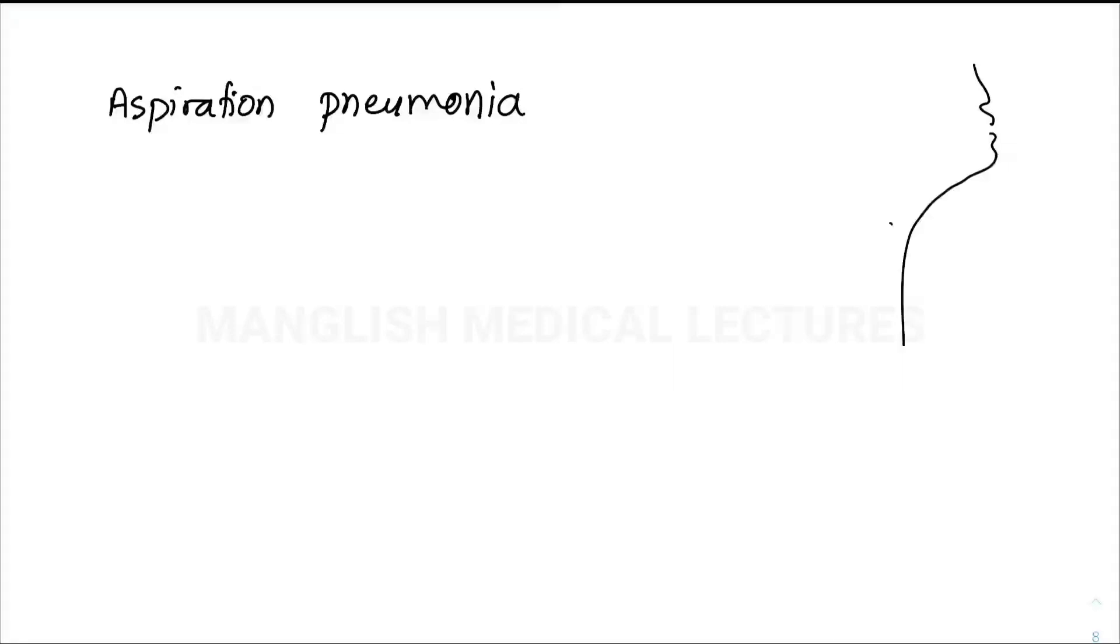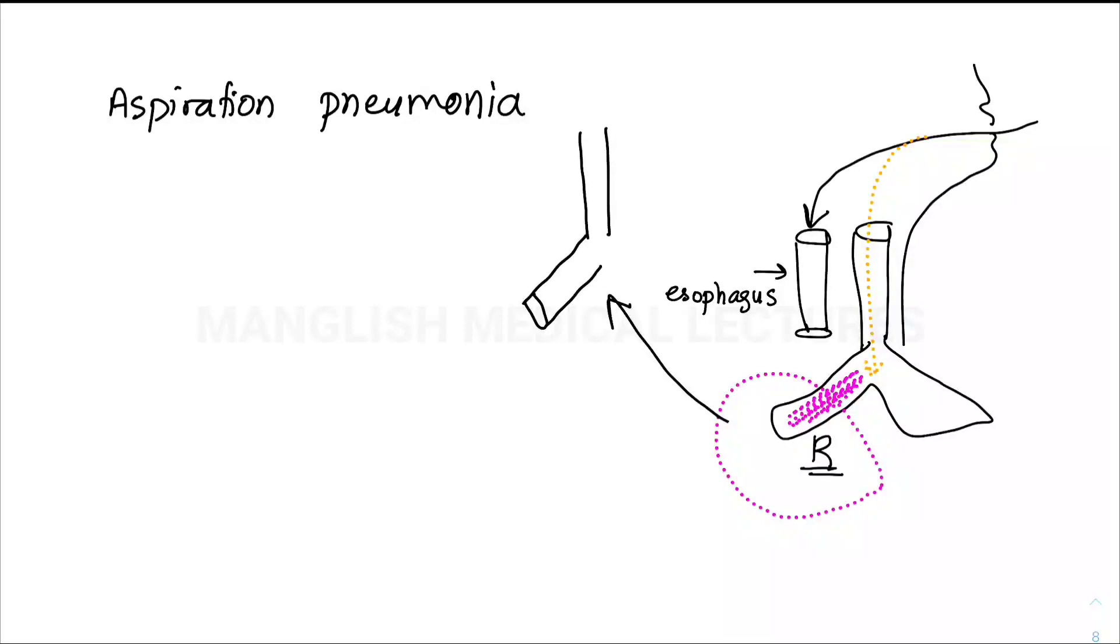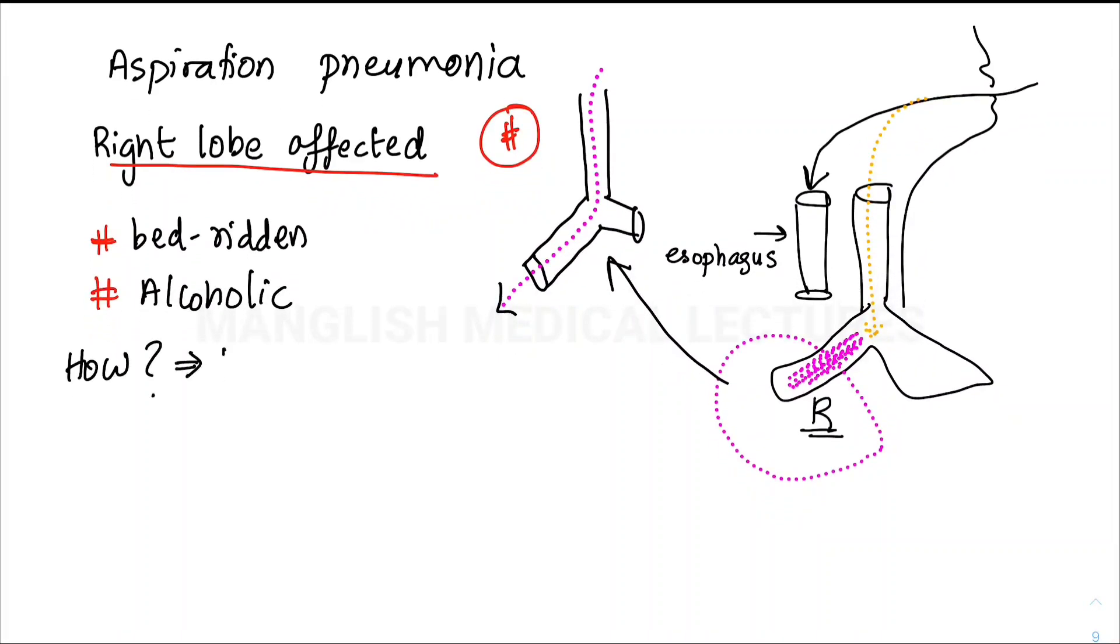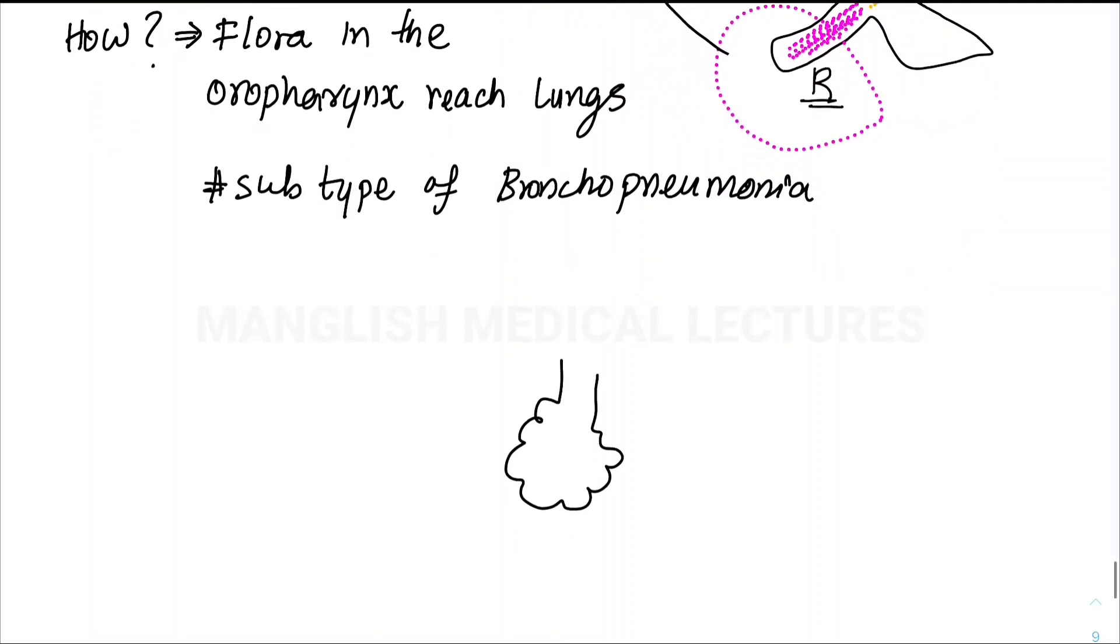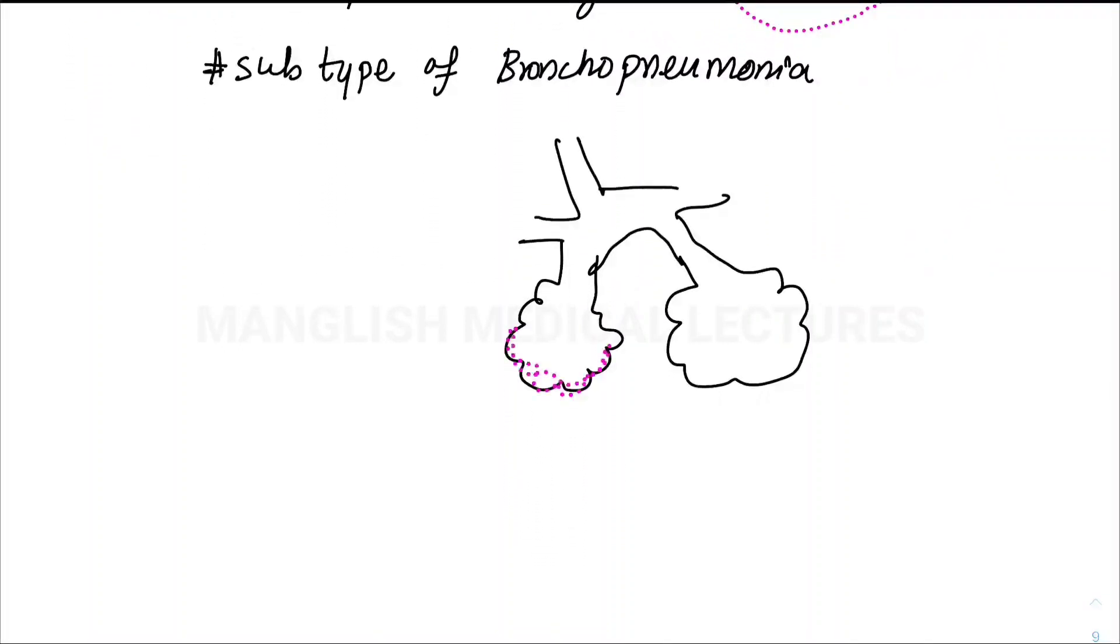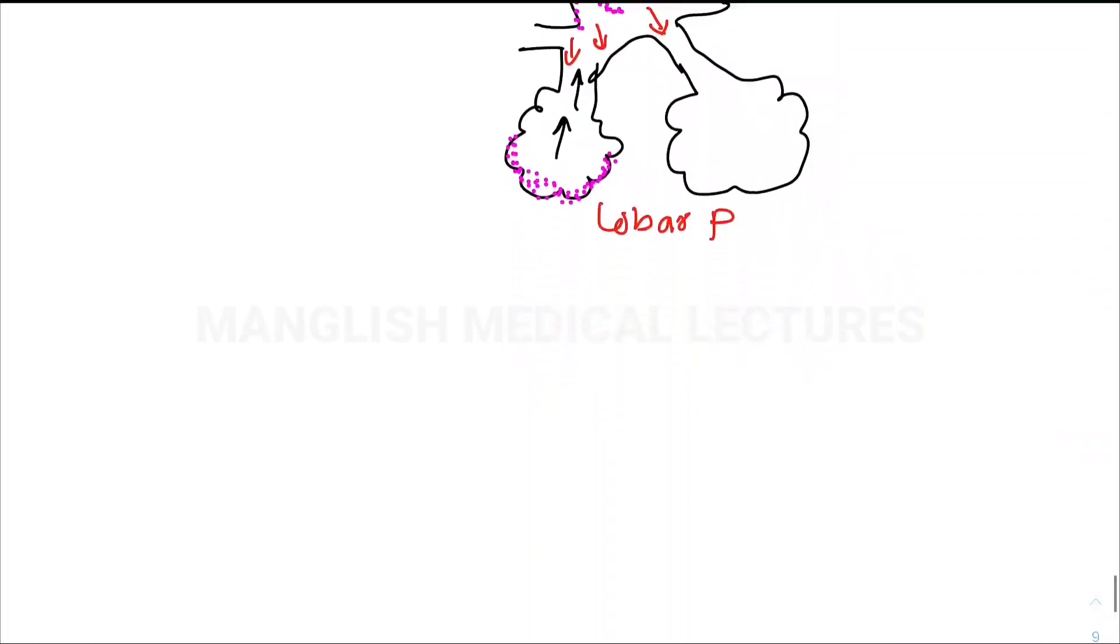Next we're discussing aspiration pneumonia. Consider the trachea going to lungs and the esophagus going to the GI tract. When we eat something, usually it goes to the esophagus, but when it goes to the trachea we have aspiration, and it usually goes to the right bronchus. Why? Because the angle of branching is the factor. You can see the right bronchus is more favorable for aspiration, so the right lobe is mostly affected. Conditions include bedridden patients or alcoholics. The flora in the oropharynx is aspirated into the lung, causing inflammatory response. Aspiration pneumonia is a subtype of bronchopneumonia. In lobar pneumonia, infection goes from the alveoli to the airways—down to up. The opposite takes place in bronchopneumonia—from the airways to the alveoli.